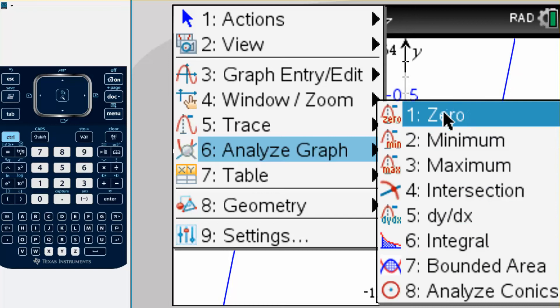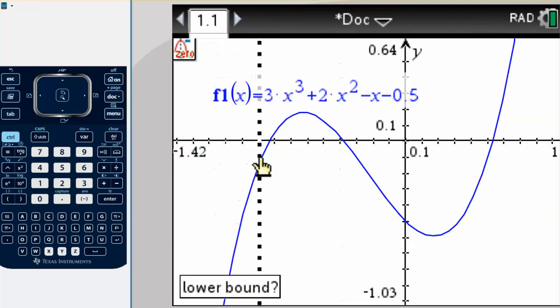If we were doing zero, we click on zero and it comes up like this. We can move this thing around, and then it says lower bound, so lower bound you're going to go to the left of it, because the graph is below to the left of it. So you go to the left of where I want to find the x intercept.